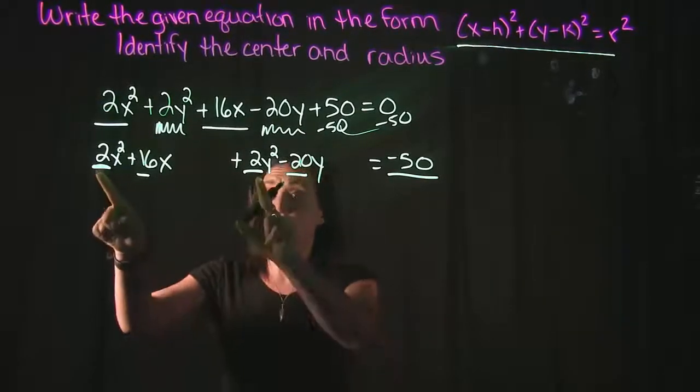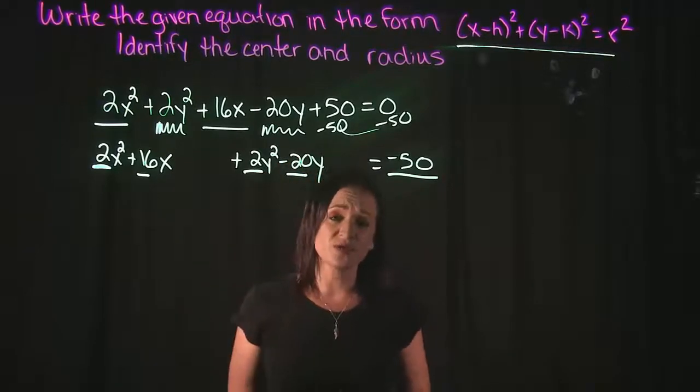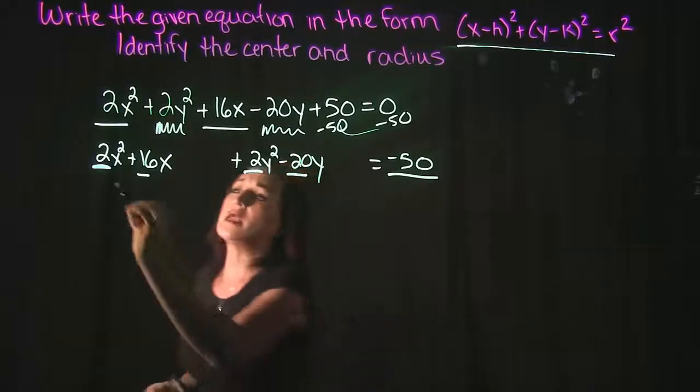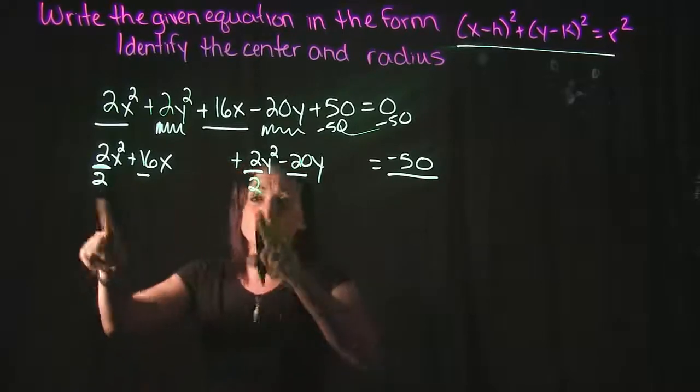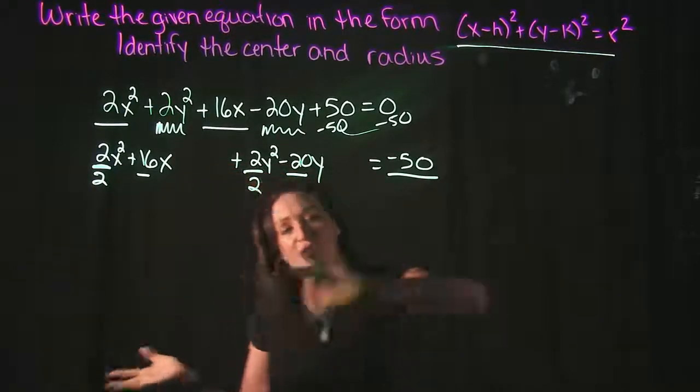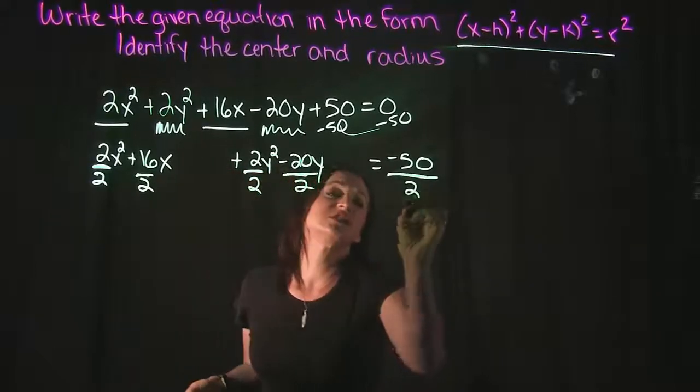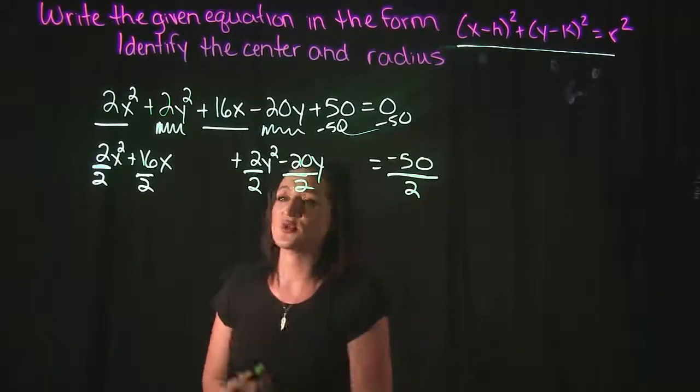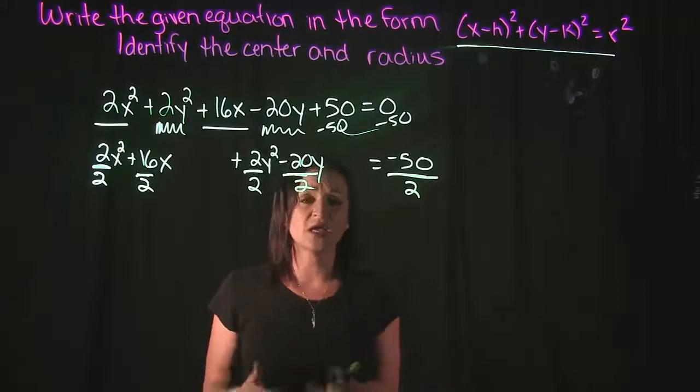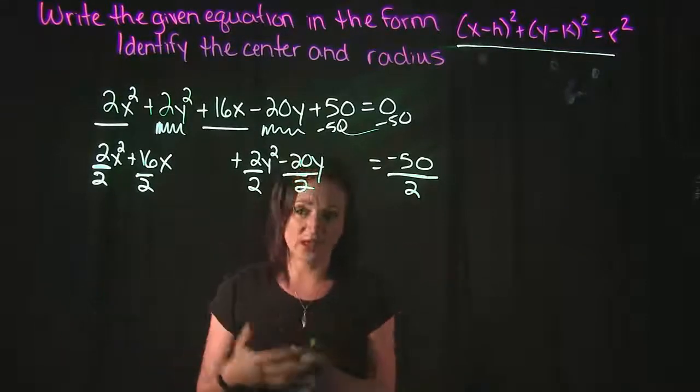So if I want to get rid of the 2, the way that you get rid of the 2 is by dividing by it. But we can't just divide these two terms by 2. You have to divide the entire equation by 2. So every term is going to get divided by 2 so that we can simplify this and put it in the proper format for completing the square.